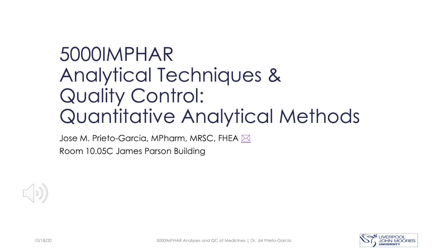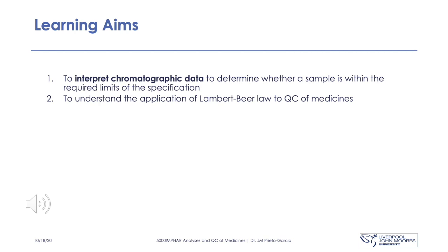Hi, and welcome to the last part of analytical techniques and quality control, which deals with quantitative analytical methods. Our learning outcomes in this part will be two. First, to interpret the chromatographic data to determine whether a sample is within the required limits of the specifications set by a pharmacopoeia. And second, to understand the application of Lambert-Beer law to quality control of medicines.